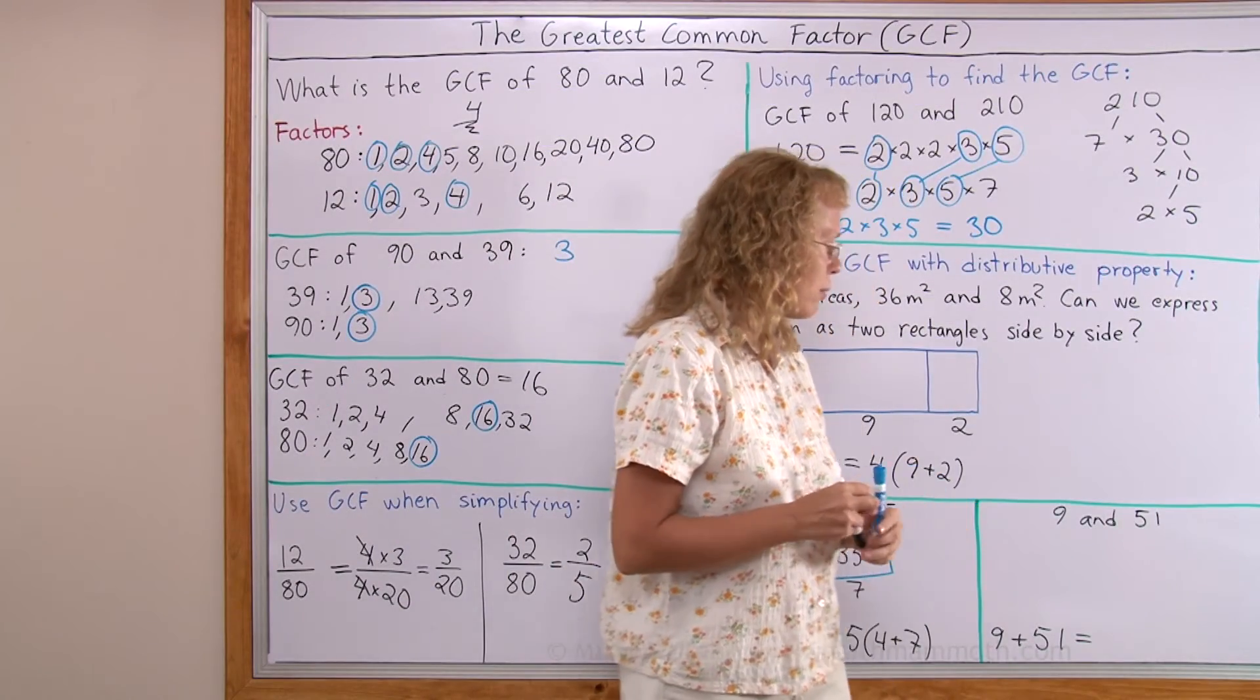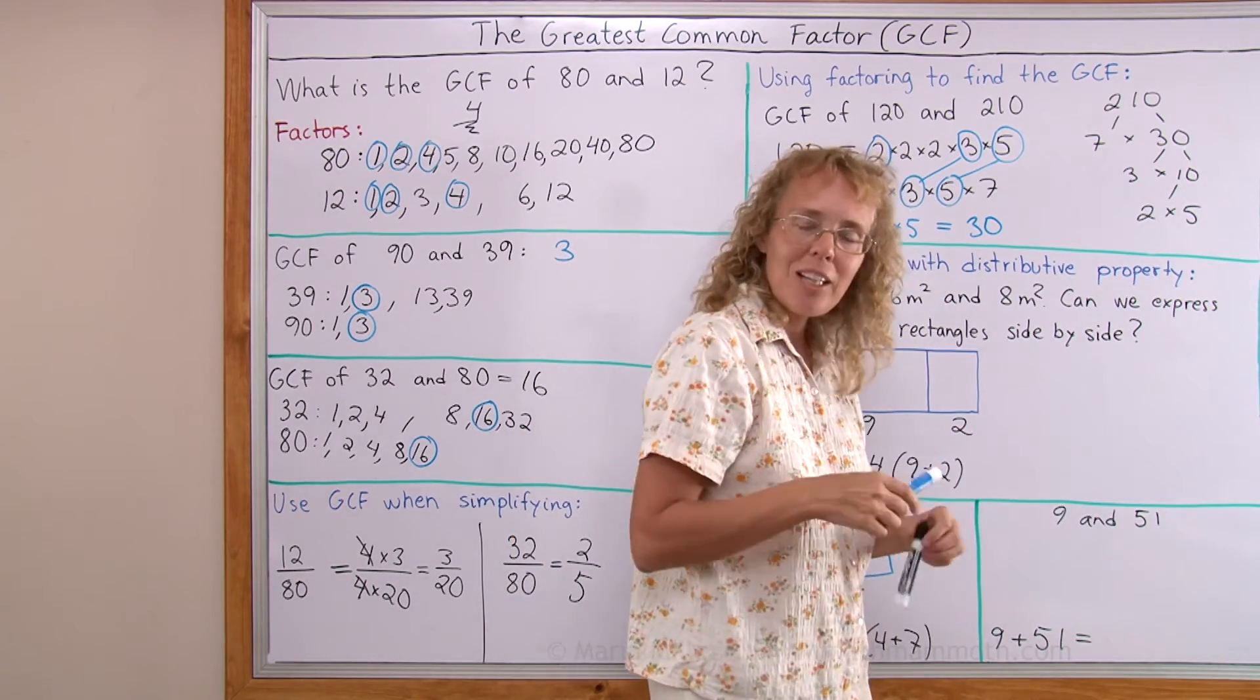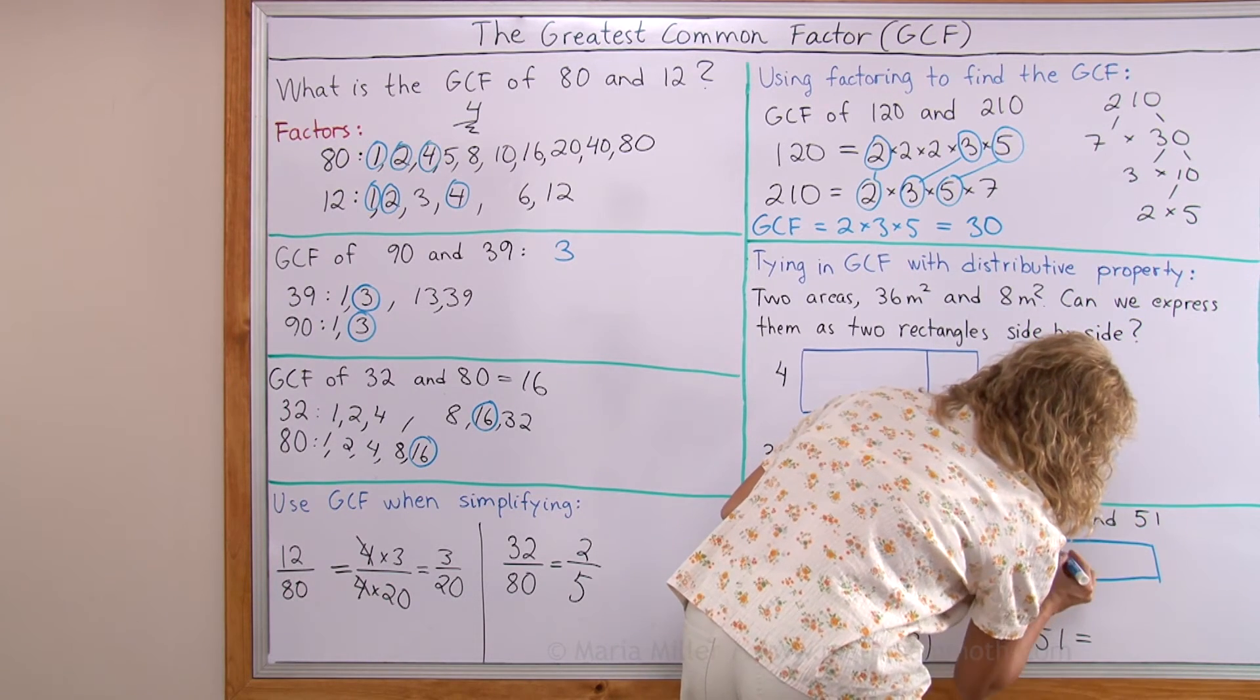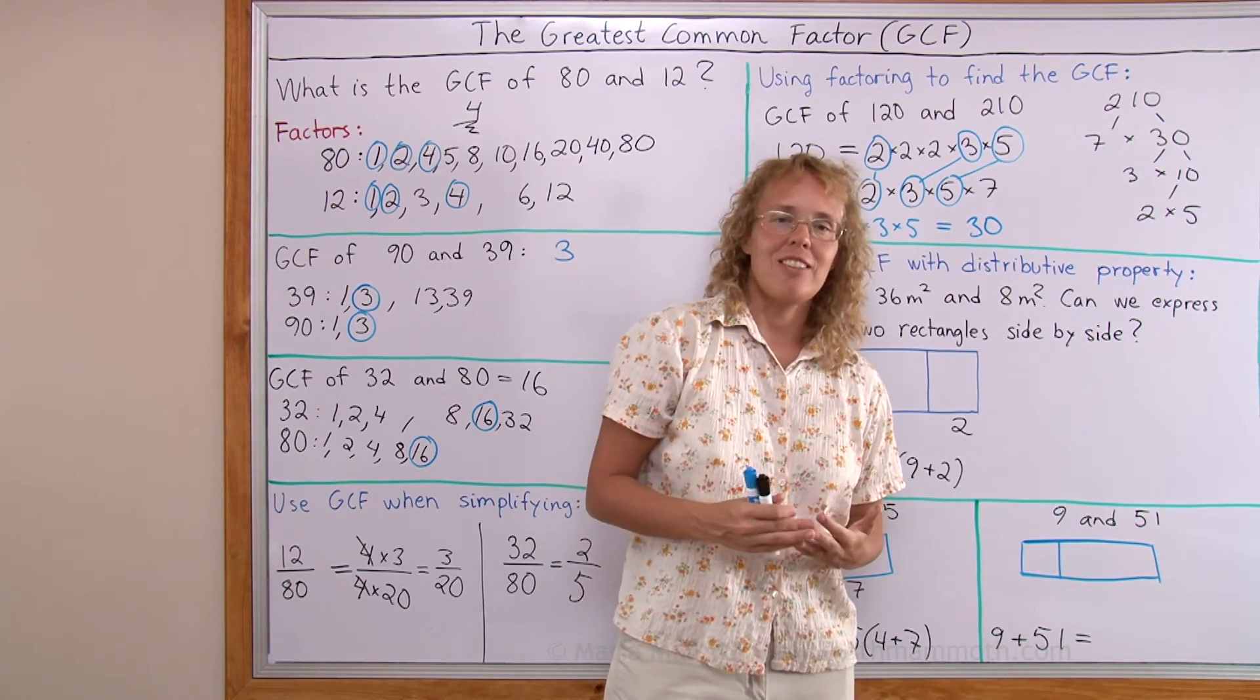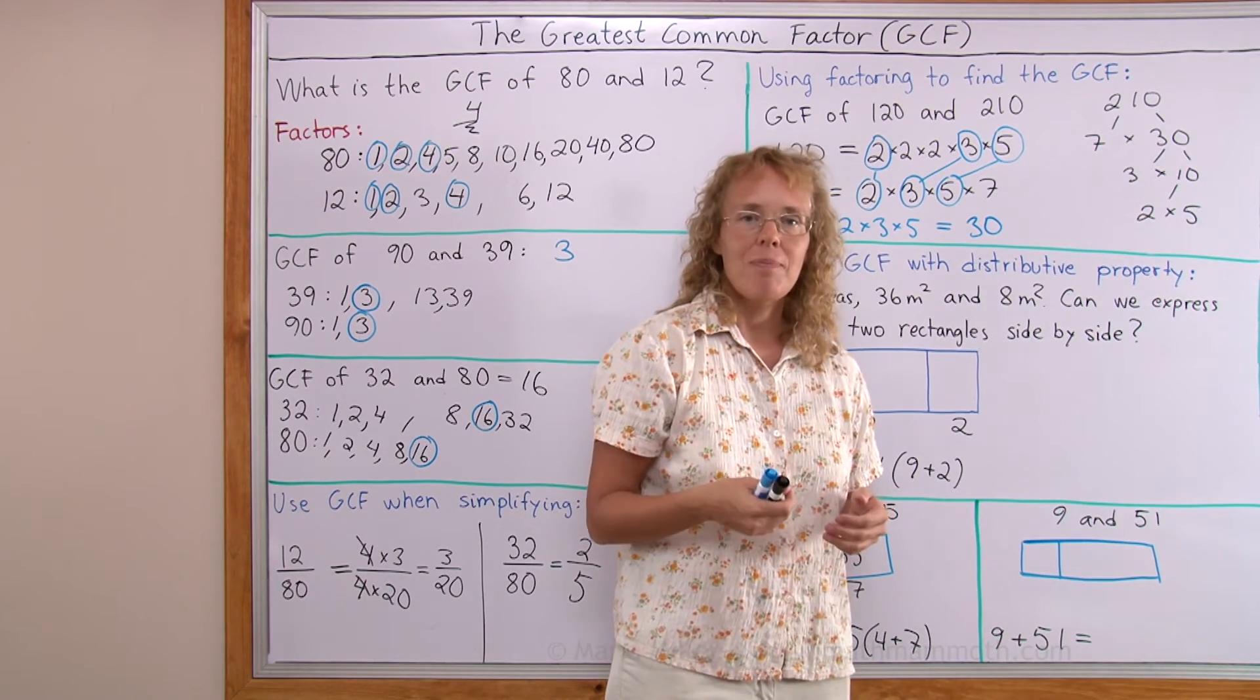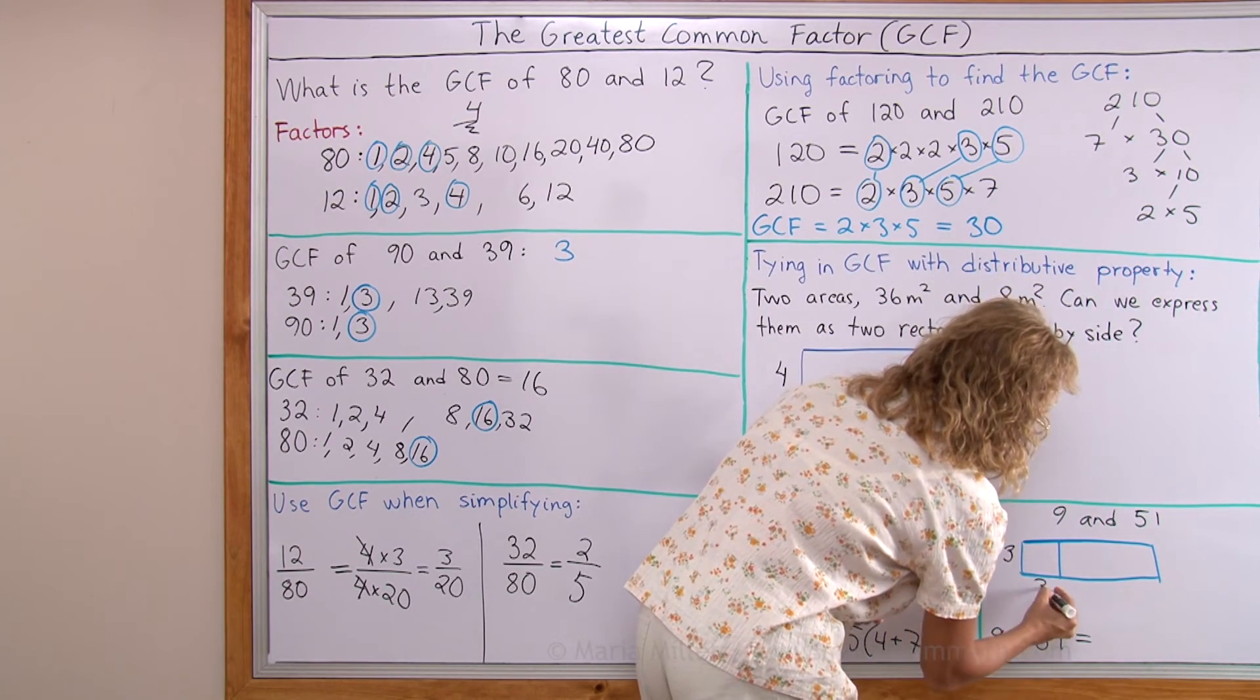Lastly, 9 and 51. What might be the greatest common factor? Can you tell while I draw the rectangle? Now 9 has very few factors. Just 1 and 3 and 9. Is any of them a factor of 51? Now 1 is. But 3 is also. 3 will work. 3 here. 3 here.